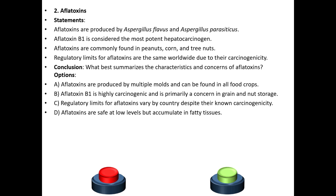Aflatoxins statements: Aflatoxins are produced by Aspergillus flavus and Aspergillus parasiticus. Aflatoxin B1 is considered the most potent hepatocarcinogen. Aflatoxins are commonly found in peanuts, corn, and tree nuts.